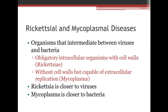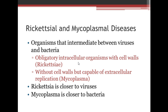Two other categories are rickettsial and mycoplasmal diseases — organisms that are intermediate between viruses and bacteria. Obligatory intracellular organisms with cell walls are called rickettsiae, while those without cell walls but capable of extracellular replication are called mycoplasma. Key distinction: rickettsiae have cell walls and are very close to viruses, while mycoplasma lack cell walls and are more similar to bacteria.